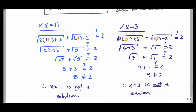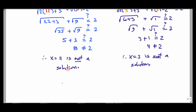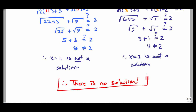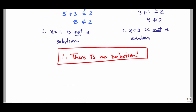Because neither potential solution is an actual solution, I have to say: therefore there is no solution. This matches what my graph indicated. It's nice when your handwork matches your graphing.